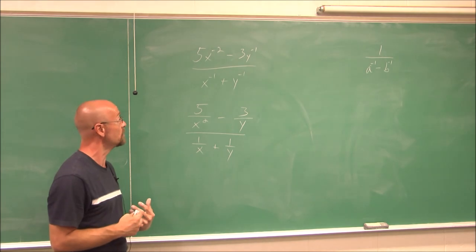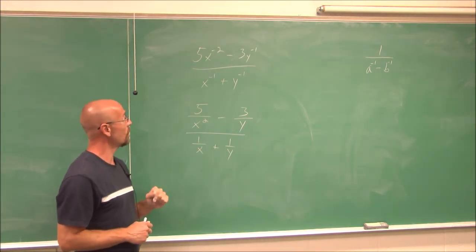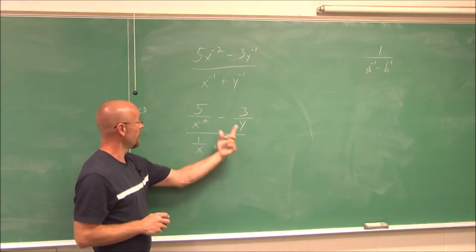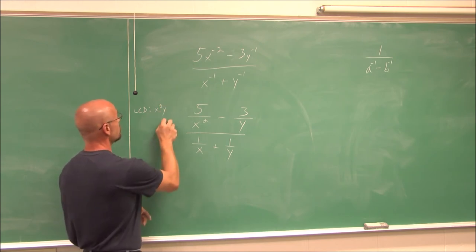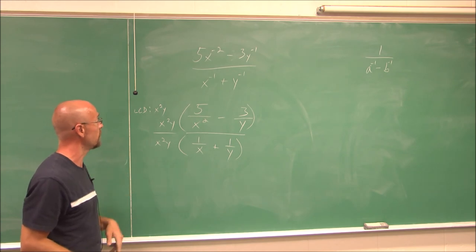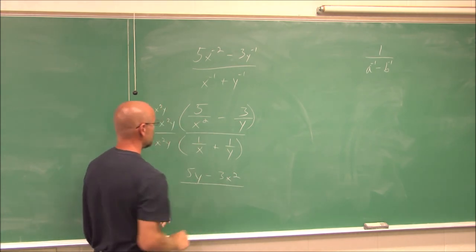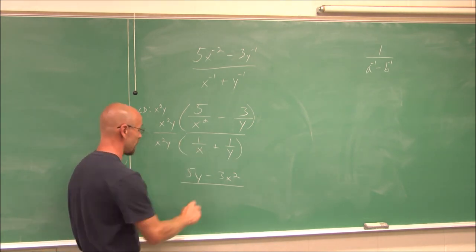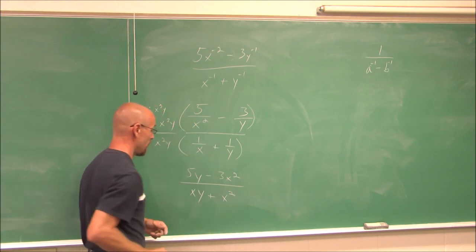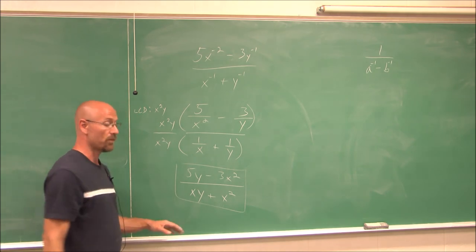Now it's just like the previous examples — I can use method 1 or method 2. I prefer method 2. I find the LCD of x² and y, giving LCD = x²y. I multiply the top and the bottom by x²y. Distributing: x²y times (5/x²) gives 5y; x²y times (3/y) gives 3x². In the denominator: x²y times (1/x), one x cancels leaving xy; x²y times (1/y), the y cancels leaving x². Nothing simplifies further, so this is the simplified expression.